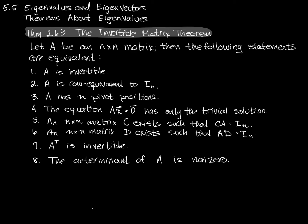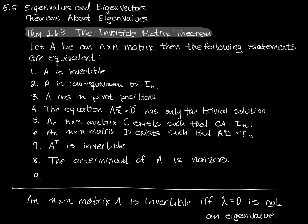In the next section — Section 5.5, the section we're in right now — we're going to add one more line to this. Your book does not do this by adding an item nine to the list. It states in Theorem 5.5.1, the Invertible Matrix Theorem, that an n by n matrix A is invertible if and only if lambda equals zero is not an eigenvalue. But we can turn this statement around and use it to add a number nine to this list of equivalent statements.